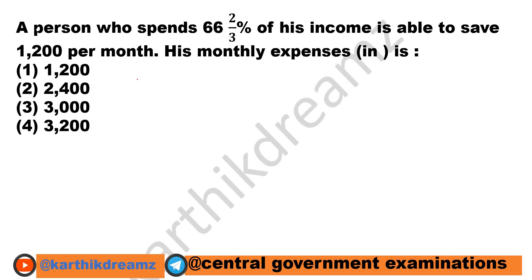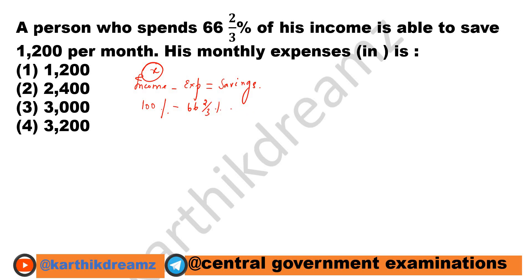We know that income minus expenditure will give savings. Let us assume Rs. X is his income. In terms of percentage, income is 100% minus expenditure 66 and 2/3 percentage, which gives savings as 33 and 1/3 percentage, which is equal to 100 by 3 percentage.